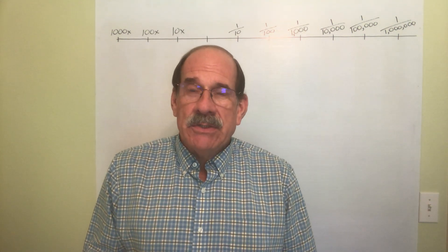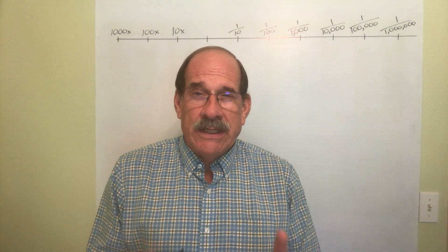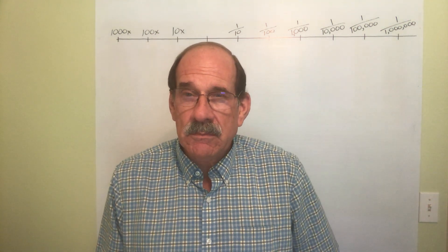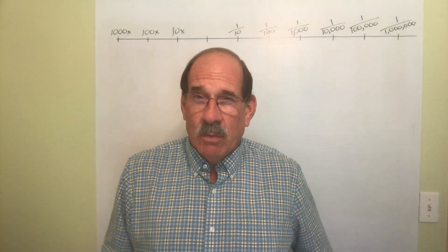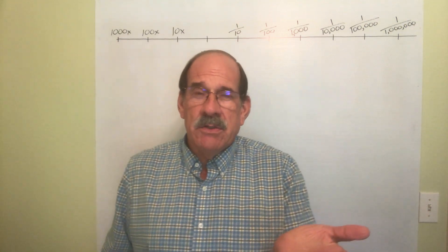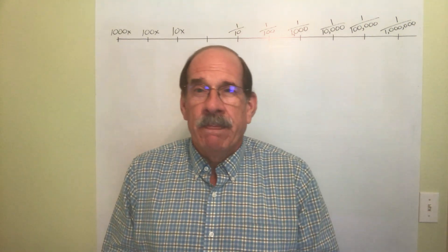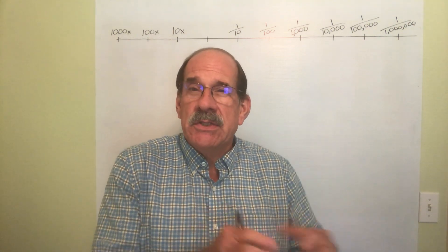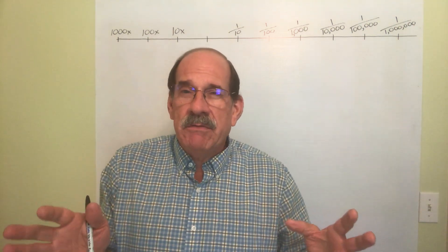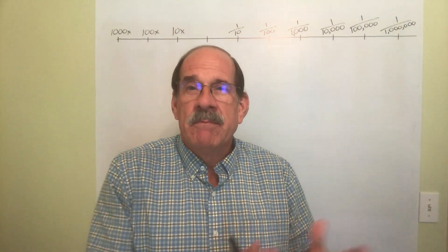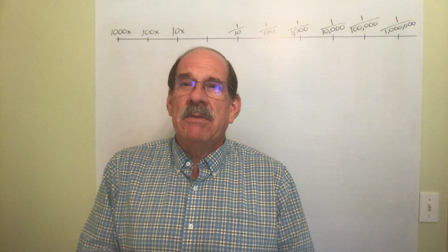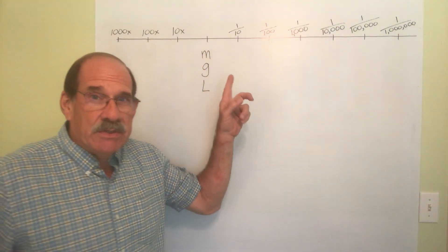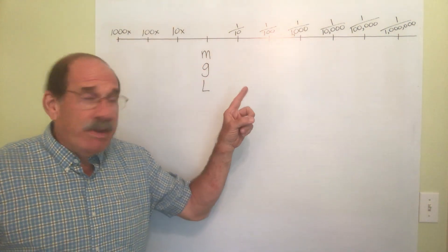One really nice thing about the metric system — there are many nice things — is that everything is in groups of ten. Whatever measurement you're talking about, there's a word for ten of those, or one-tenth. They're always in tens: ten times or one-tenth of, or subdivisions of those. Here's what this chart represents.